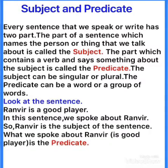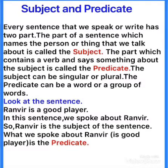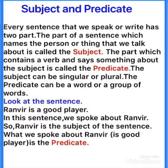Yeh singular bhi ho sakti hai jaise he, she, aur ek name ho gaya — it, singular ho gaya. Aur yeh aise bhi ho sakti hai: 'They have done this,' 'They had made me happy' — so yeh they kya ho gaya? Plural. 'Children were making noise' — so children kya ho gaya? Children is a subject, aur bohut zyada children ki baat ho rahi hai, toh yeh kya hai? Plural.